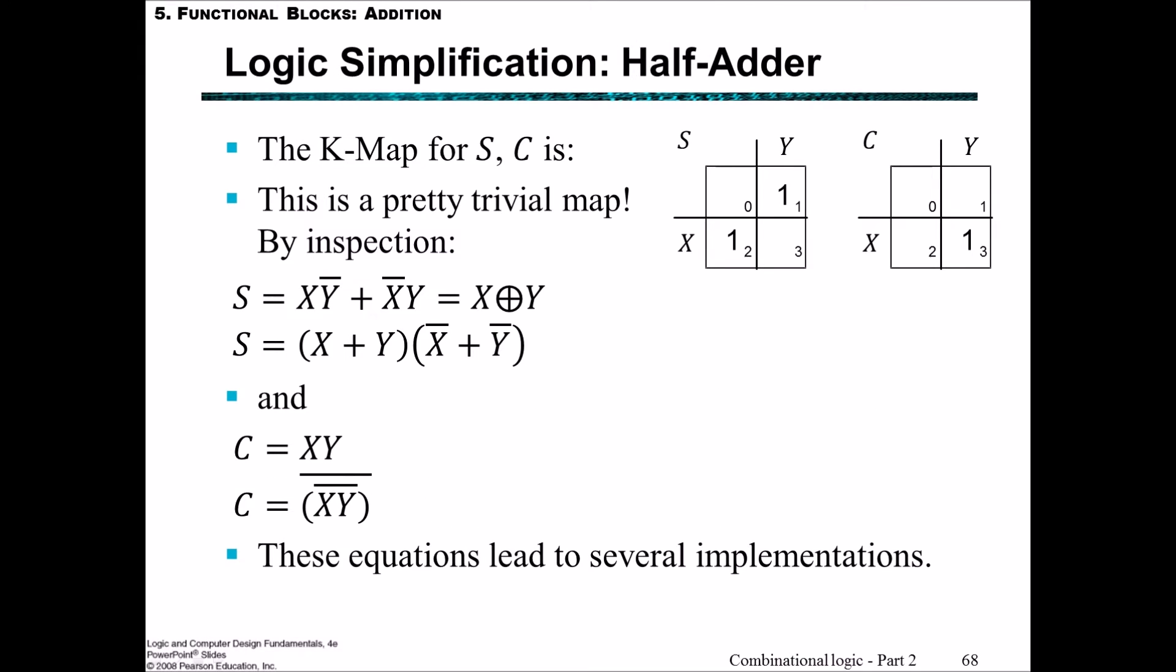We'll create now the K-maps for the S and C outputs. S is one for indexes one and two, C is one only for index three. We can take these min terms out and recognize that this is an odd function, which can be represented with XOR: S = X ⊕ Y. For C, we have X AND Y, or alternatively the double-negated X AND Y. Hopefully the movement from the truth table to this K-map appears very obvious, because we'll be building on this when we get to the full-adder.